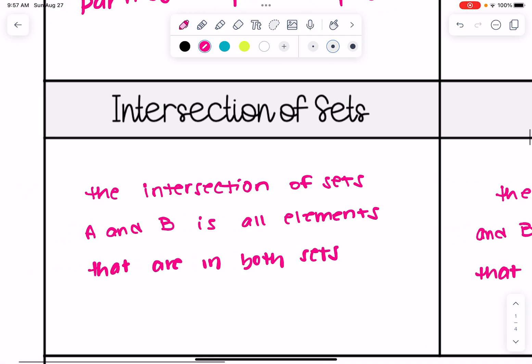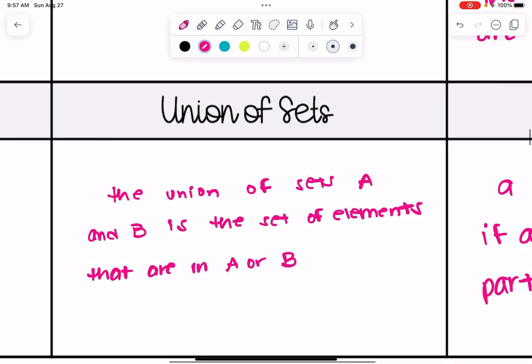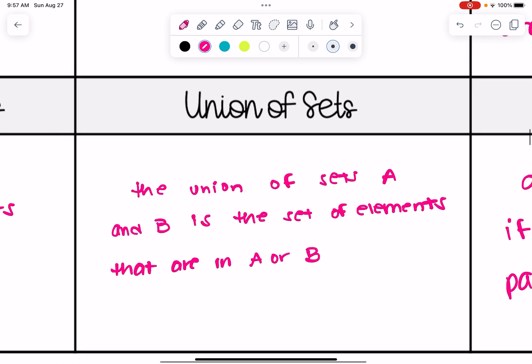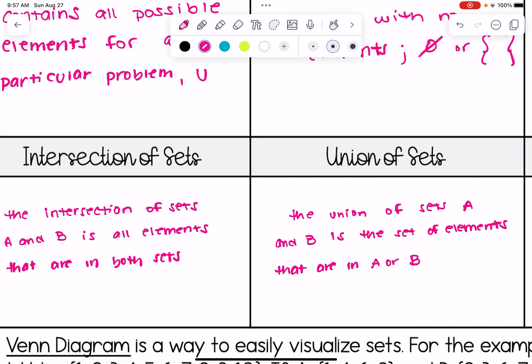The intersection of sets. The intersection of sets A and B is all elements that are in both sets. It's in both A and B. Think about that as like where they overlap. The union of sets: when you unite things that's a union right, you bring them together. So the union of sets A and B is a set of elements that are in A or B.